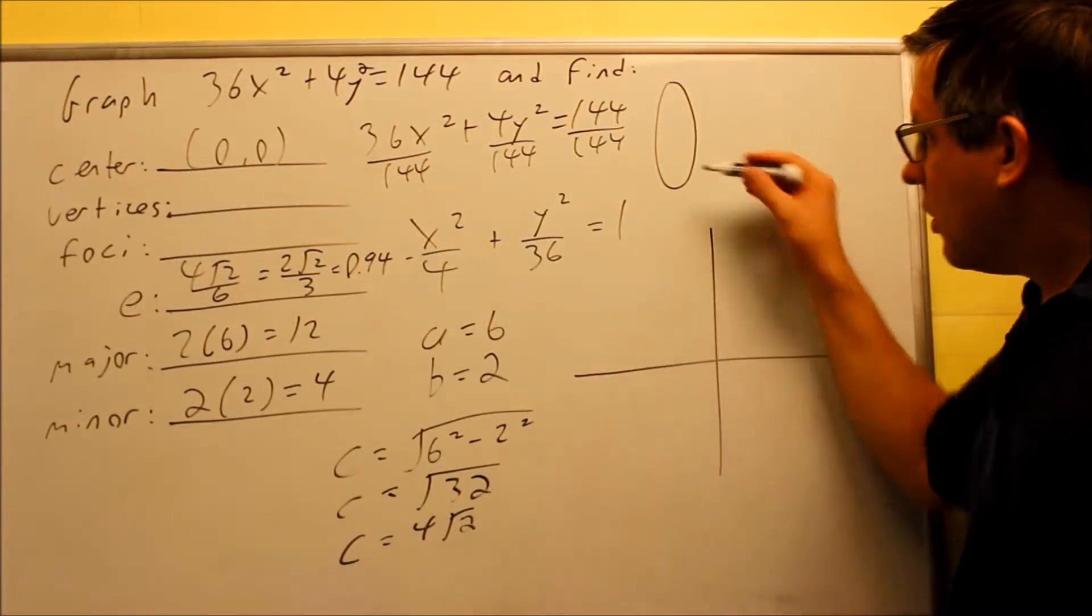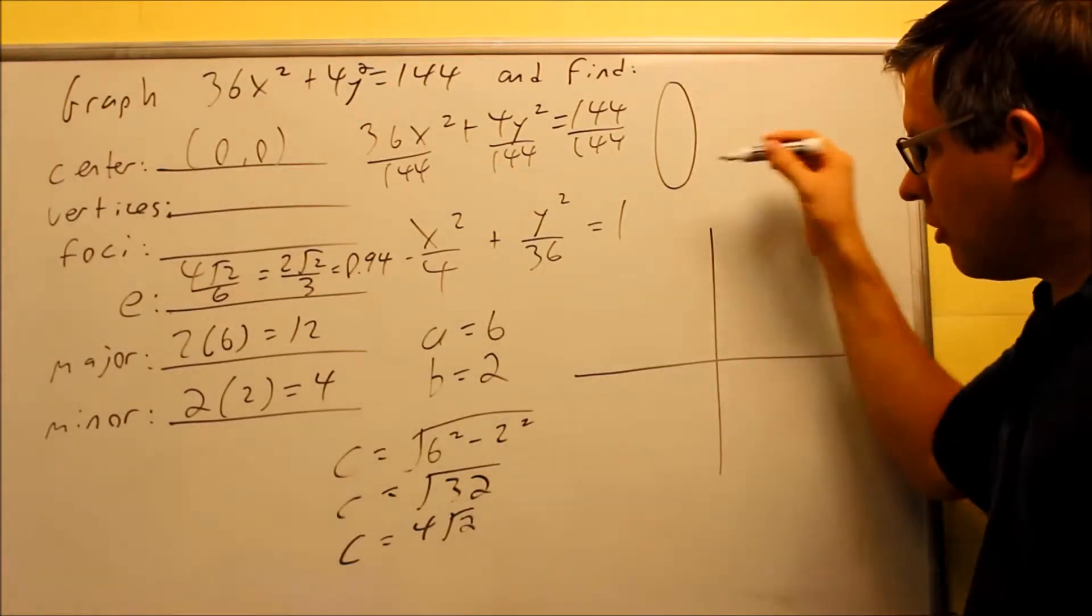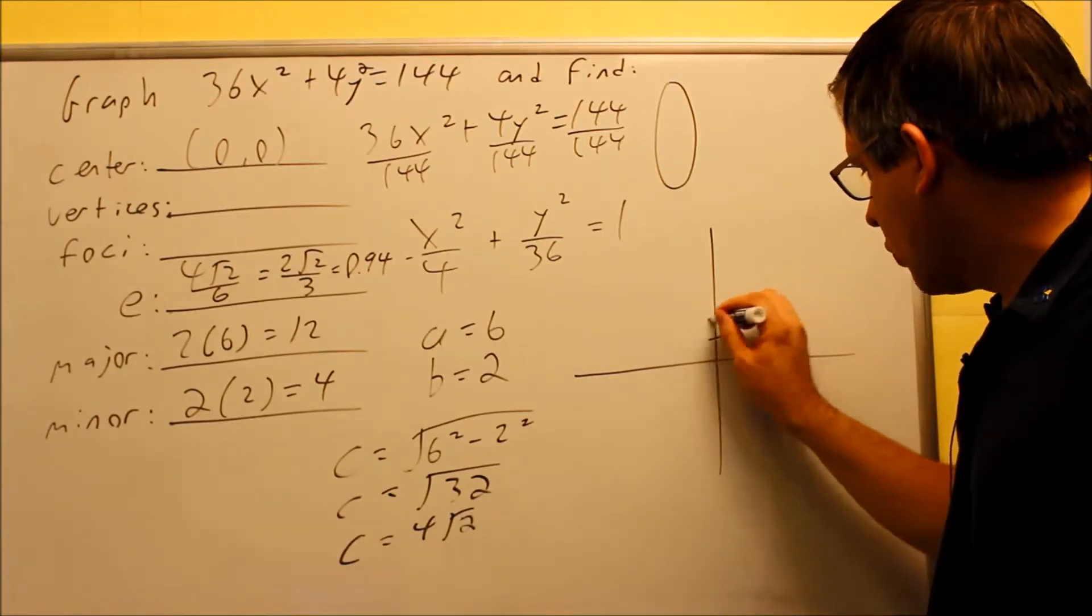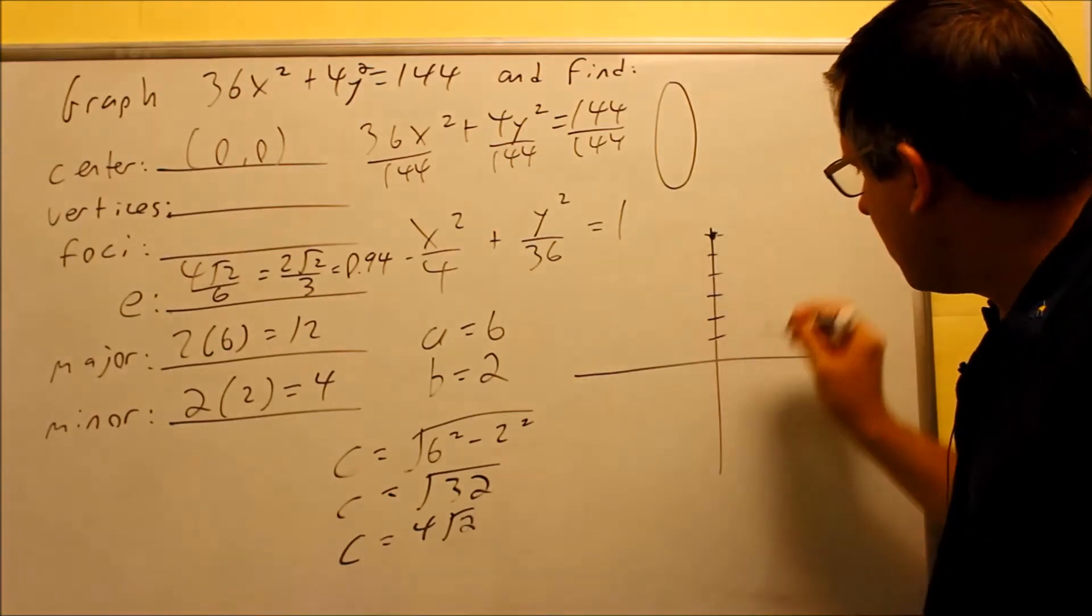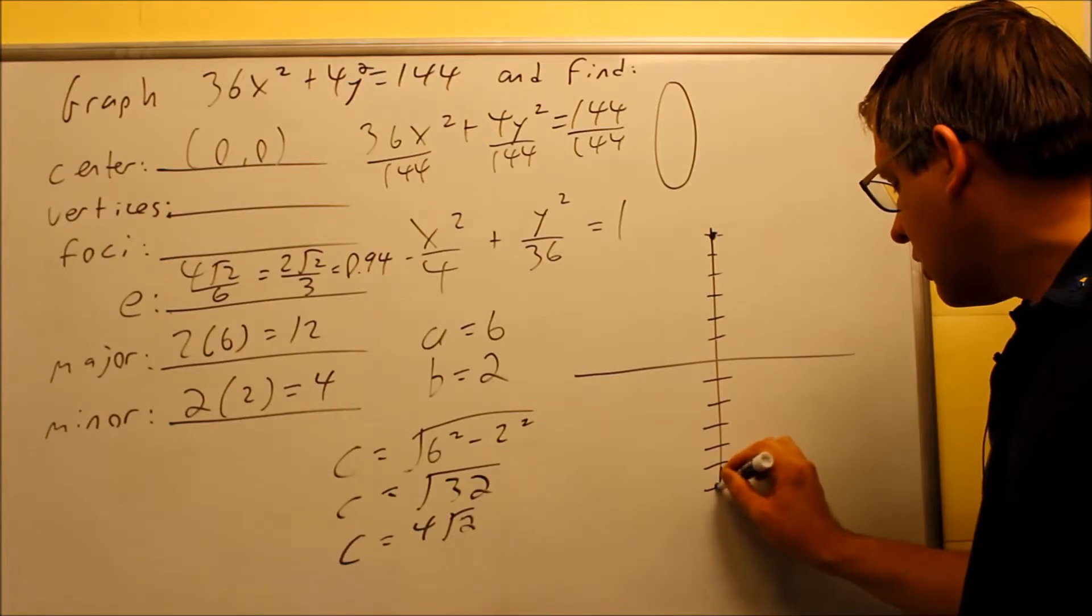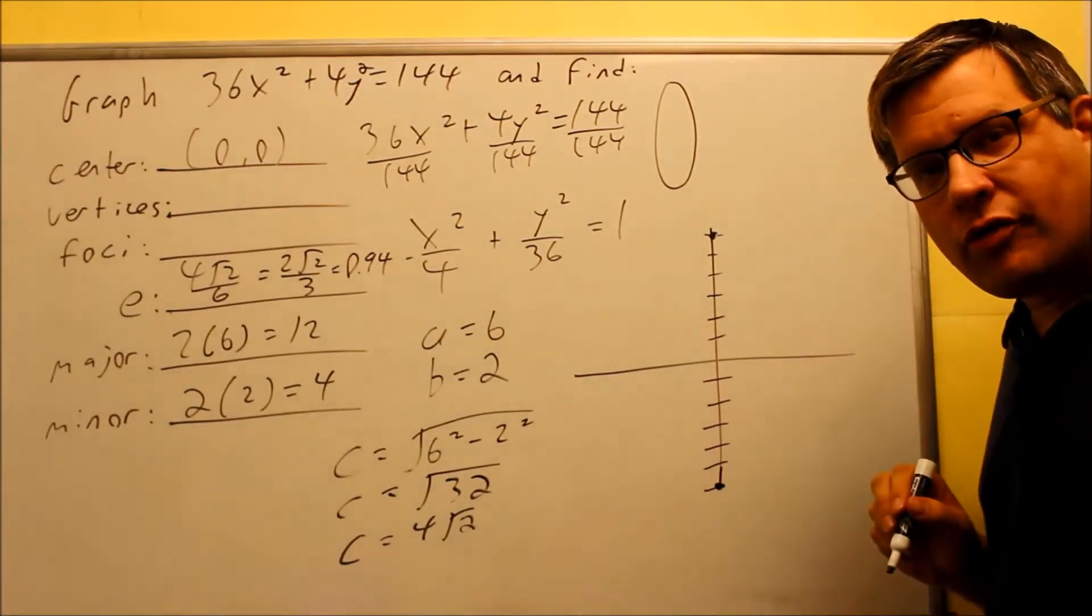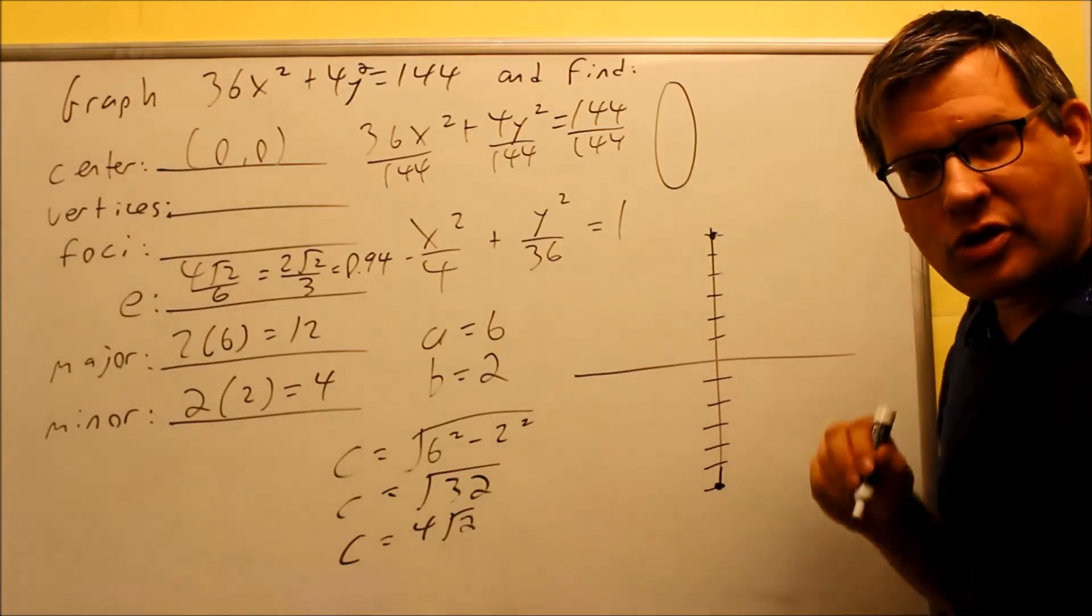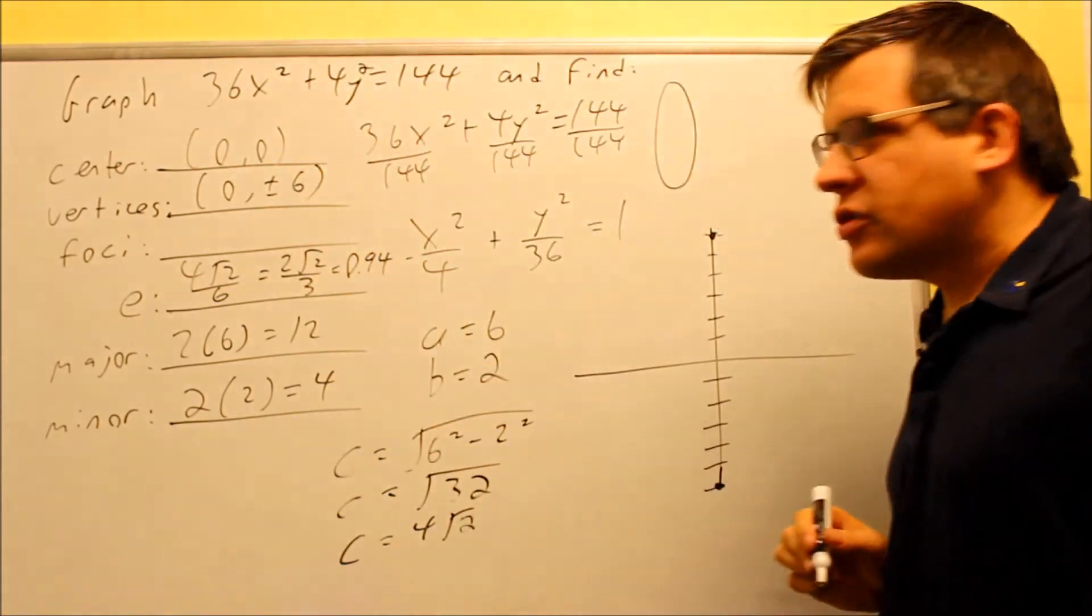The a always goes in the direction that it opens up. So because it goes up and down, a value also has to go up and down. We're going to go up 6. So we go up 6 right here, we make a dot, and we go down 6, make a dot. Right there, the a values that we just did there, those are your vertices. So we're going to write those coordinates down. That's 0, plus or minus 6. So 0, plus or minus 6, that's our vertices.